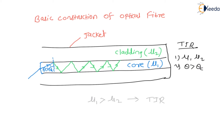This ensures that all of the light remains in this particular core section and no light enters the cladding. So always remember these two things: the refractive index of the core must be greater than mu2 — the refractive index of the cladding — and light must be incident at the wall of the core at an angle greater than its critical angle.